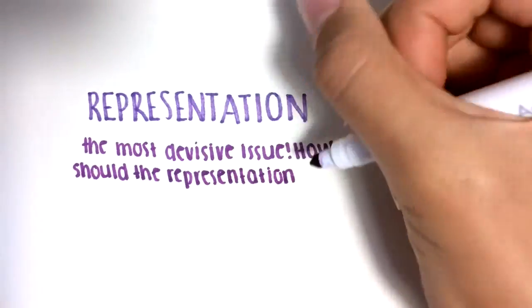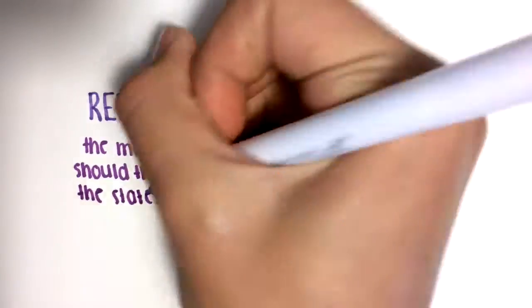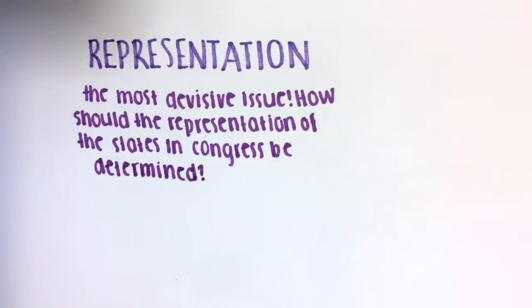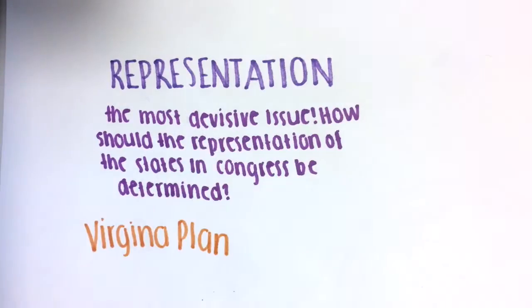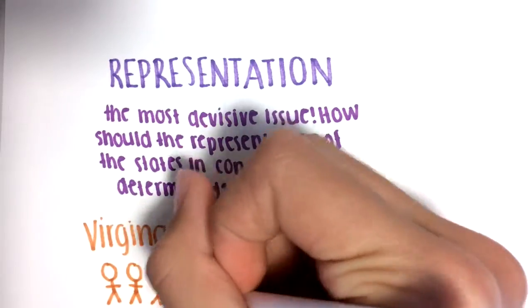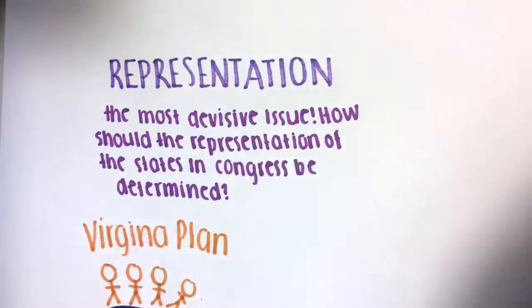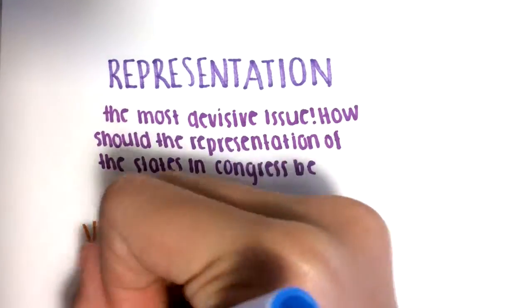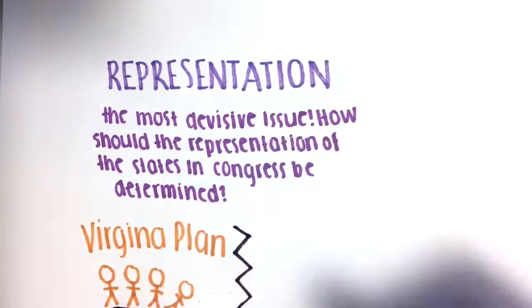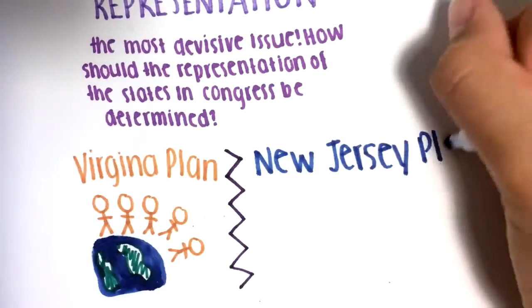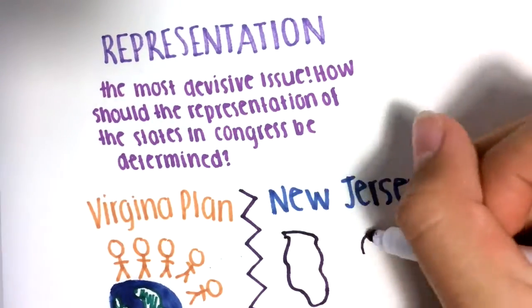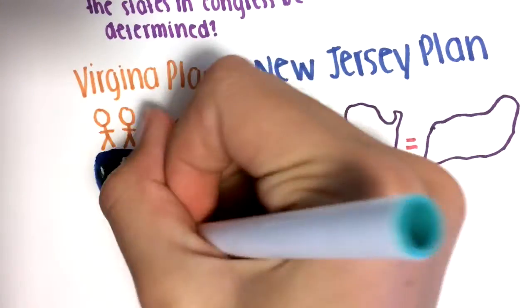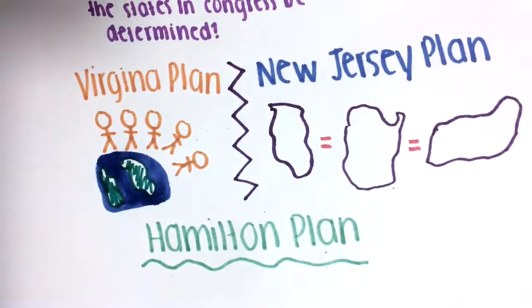The most divisive issue was solved next: Representation. How should the representation of the states in Congress be determined? The first side, better known as the Virginia Plan, said that the states should be represented by the population or people. While the New Jersey Plan stated that every state must be equal. Both Virginia and New Jersey Plans came to a conclusion that senators should represent the states, and representatives are based on the population. This final compromise was named the Hamilton Plan.